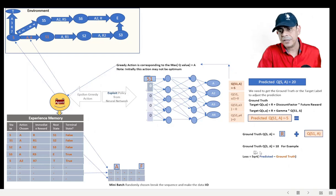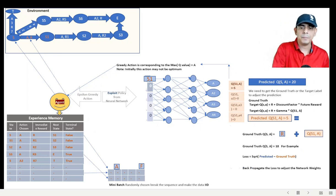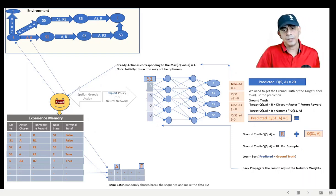And then calculate the loss function. If this is 20 and this is 18, for example, then we know the predicted and ground truth. The predicted minus ground truth is going to give you the MSE. The loss function can then be backpropagated to adjust the weights.